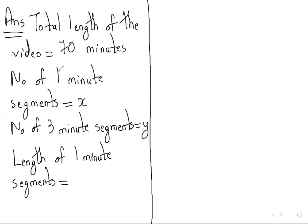We need to multiply the minutes by the number of segments. For one-minute segments, that is one multiplied by x, which gives us x. Similarly, for the three-minute segments, we multiply three by y, giving us 3y.